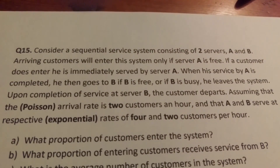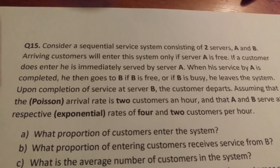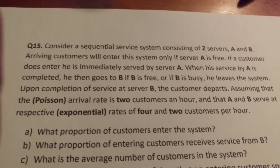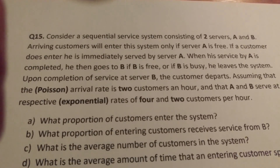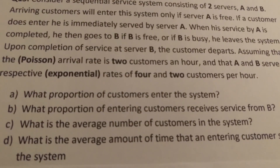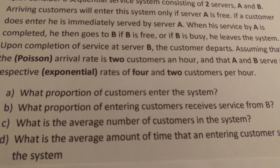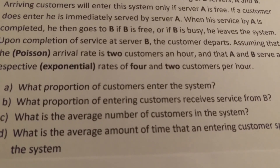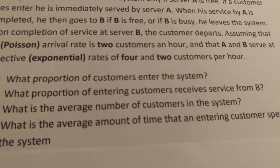Assuming the arrival rate is two customers per hour, and A and B serve at respective exponential rates of four and two customers per hour, we want to find: what proportion of customers enter the system, what proportion of entering customers receive service from B, what is the average number of customers in the system, and what is the average time an entering customer spends in the system.